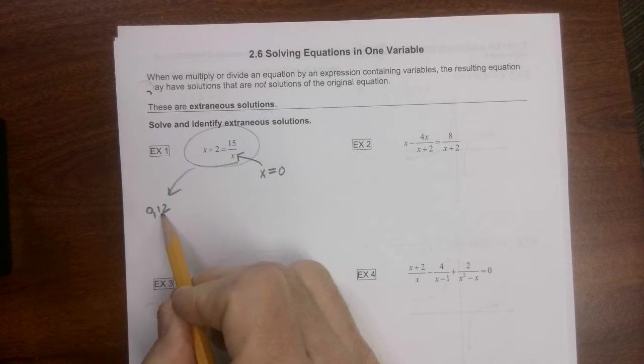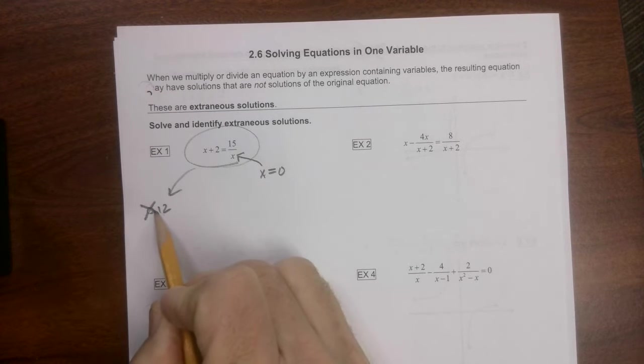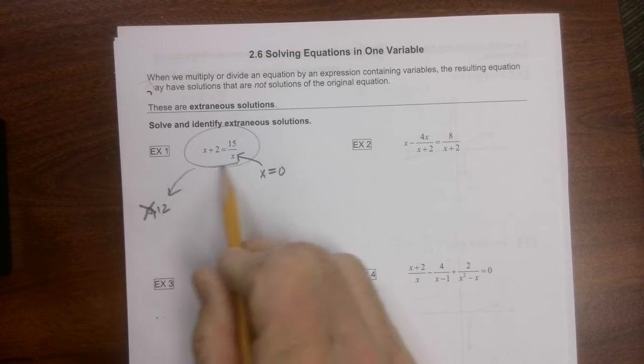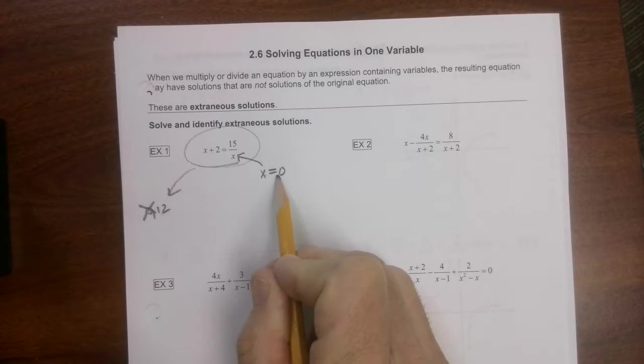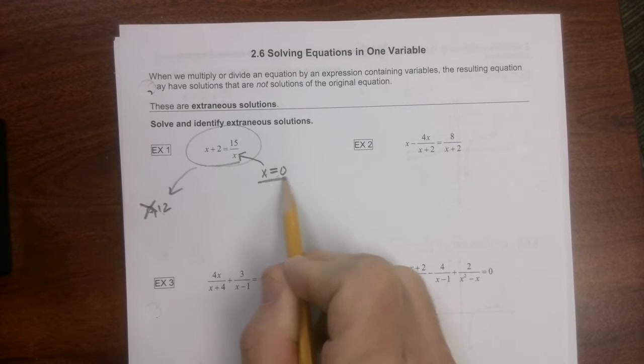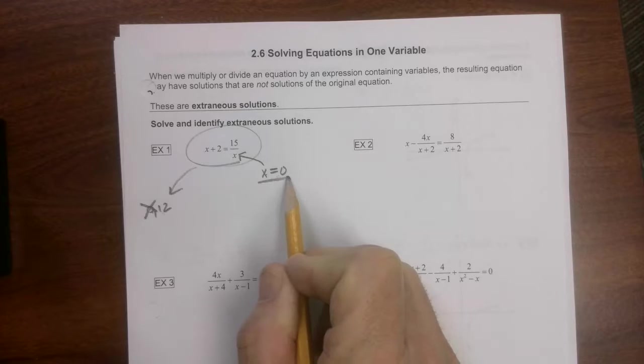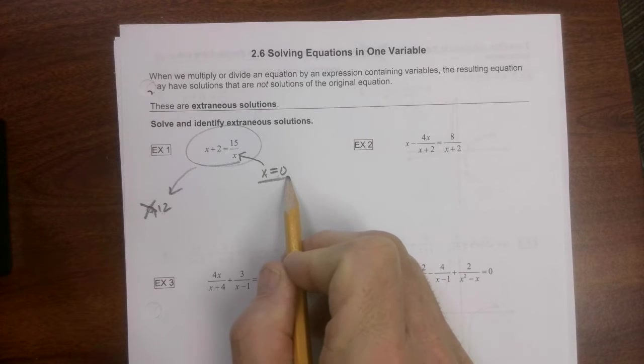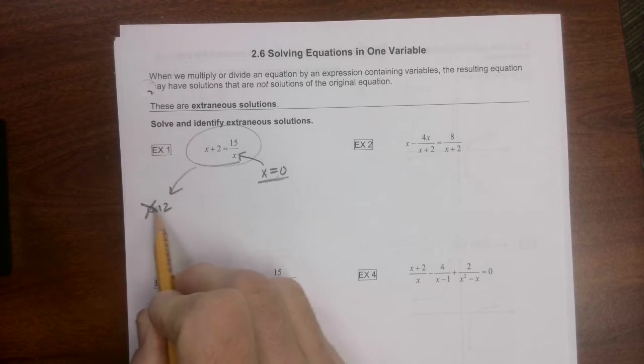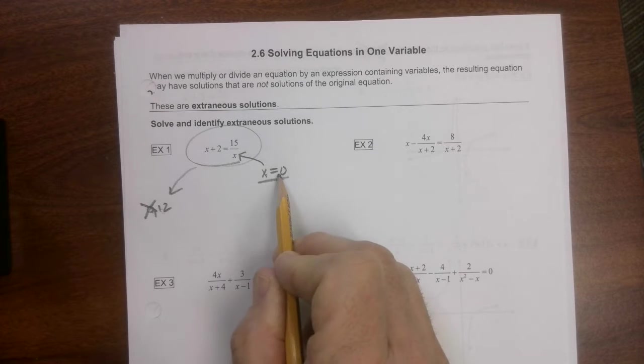for our answers, we would say 0 cannot be one of our answers because it's not part of our domain. Therefore, this would be considered an extraneous solution, which means it's not a solution at all. It's something that is a possibility, but it's already been canceled out.